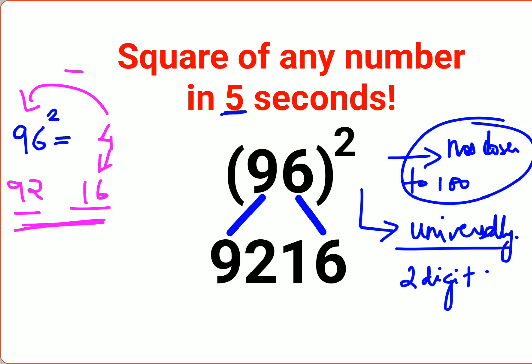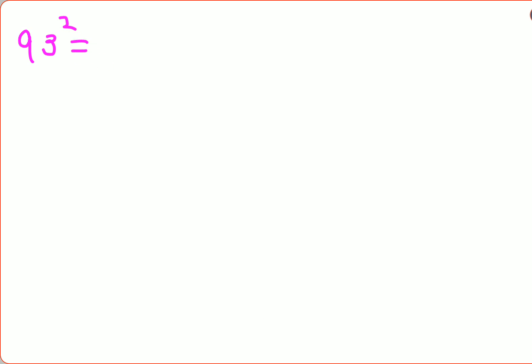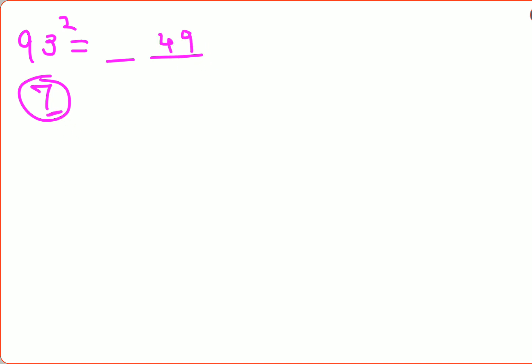Let's try 93 squared. We know it is 7 away from 100. The second part is 7 squared, which is 49, and then subtract 7 from 93, which gives you 86. So 93 squared is 8649.